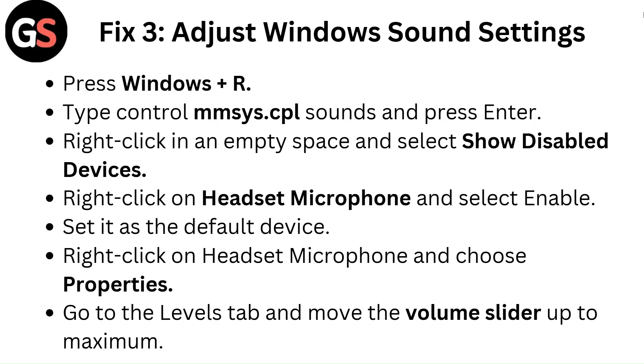Set it as the default device. Right click on headset microphone and choose properties. Go to the levels tab and move the volume slider up to maximum.